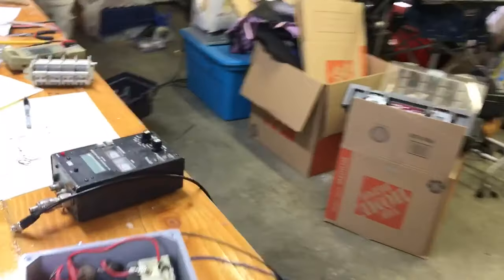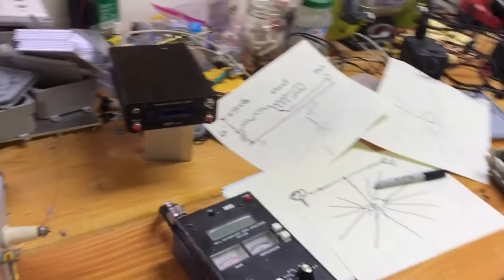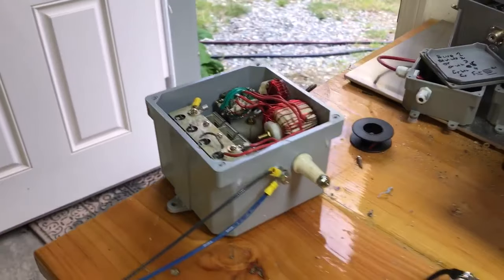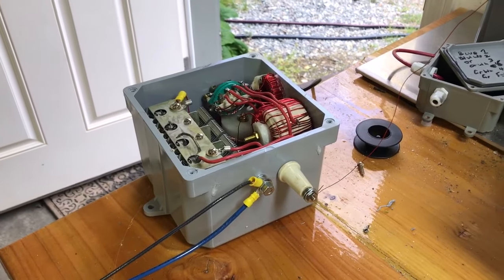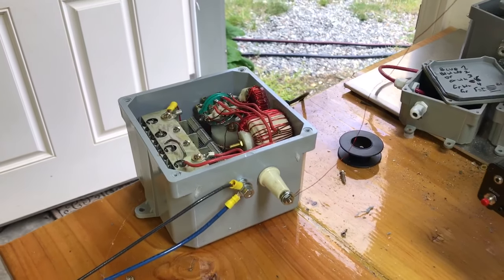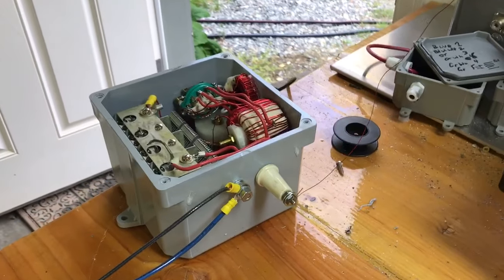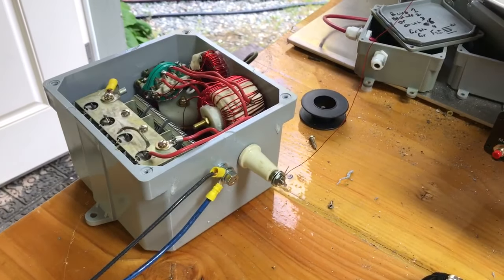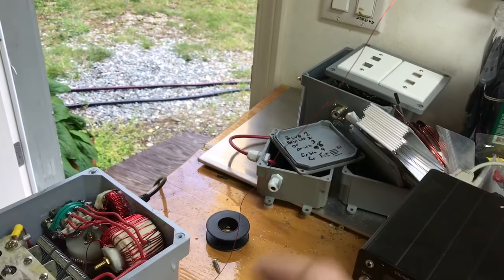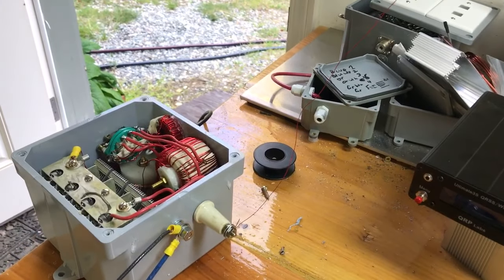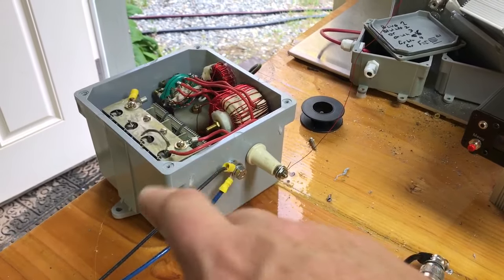What we didn't talk about yesterday was the earth or ground side of this tuning unit, which is vitally important. You need one of those as a return for your aerial current. You need to collect it around the earth radial field and bring it back to the tuner—it's all part of the circuit.